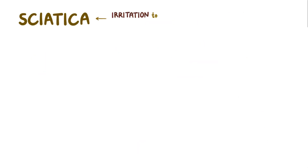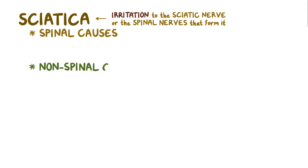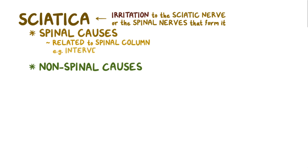Sciatica occurs when there's irritation to any part of the sciatic nerve or the spinal nerves that form it. The causes of sciatica can be divided into two groups: spinal and non-spinal. Spinal causes are related to the spinal column. The most common one is intervertebral disc herniation.